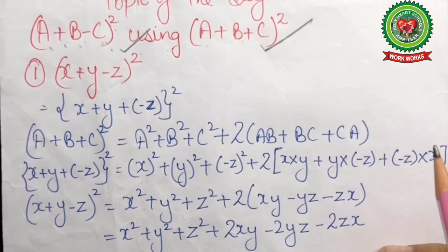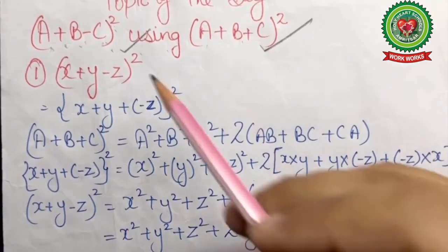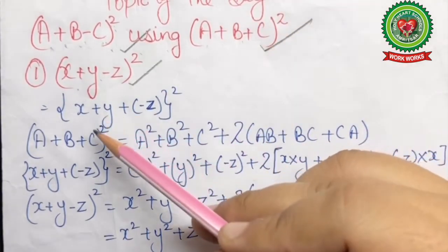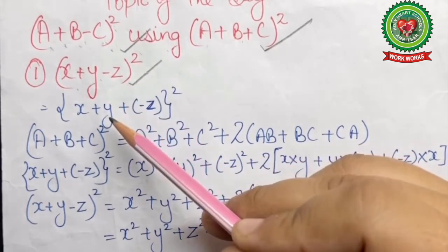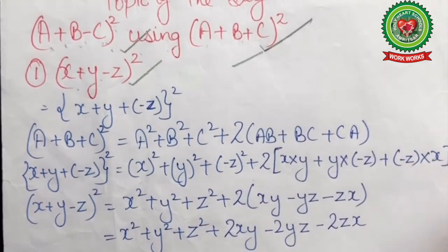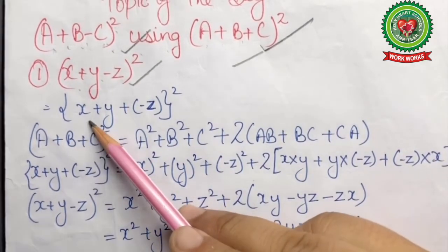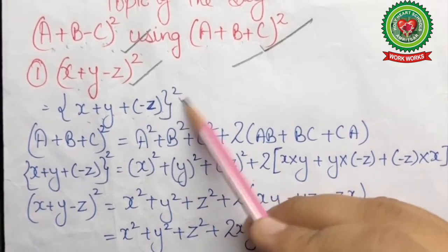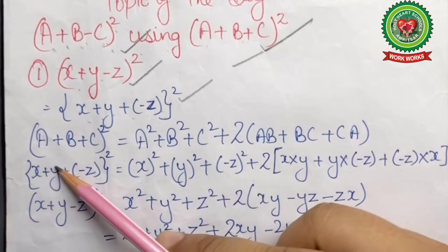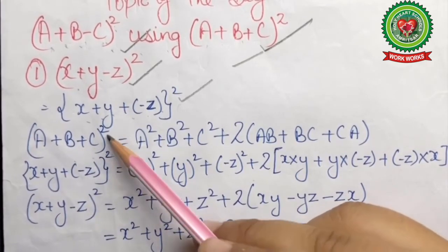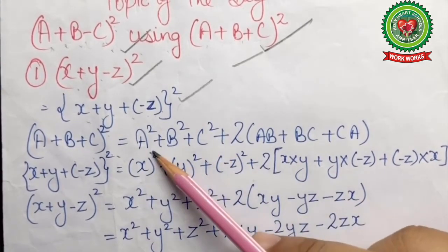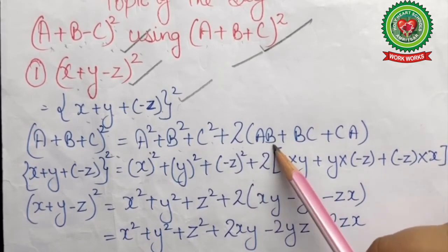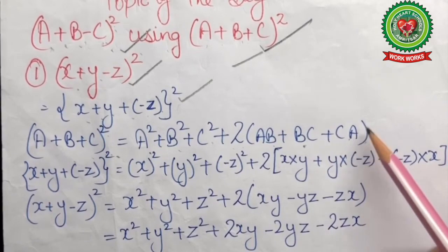The first example we are going to discuss is (x+y-z)². First of all, we are going to change this into the form of (a+b+c)², so we rewrite the statement as (x+y+(-z))². Now this is in the form of (a+b+c)², which is equal to a²+b²+c²+2(ab+bc+ca).